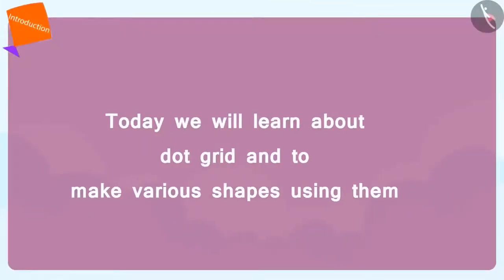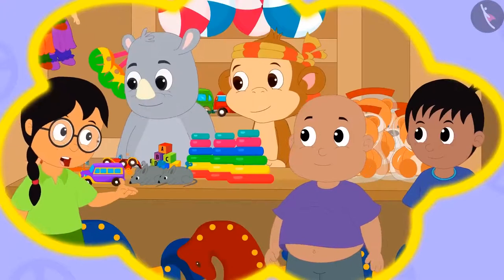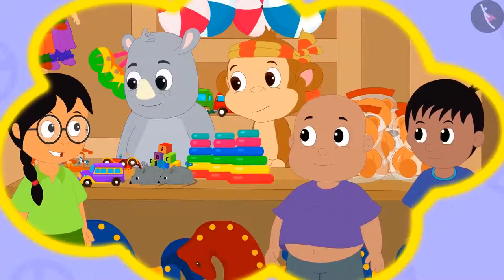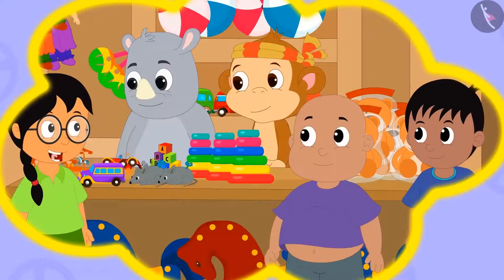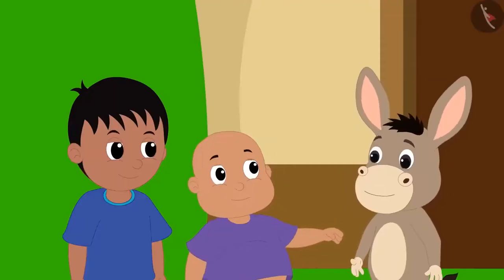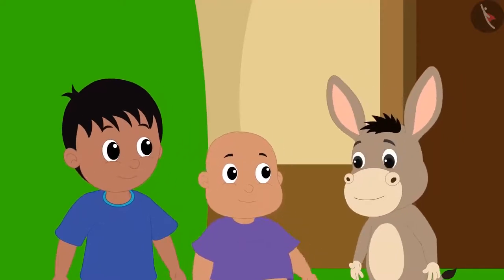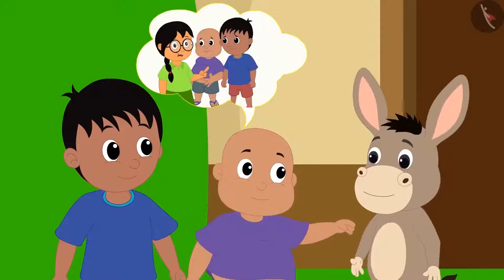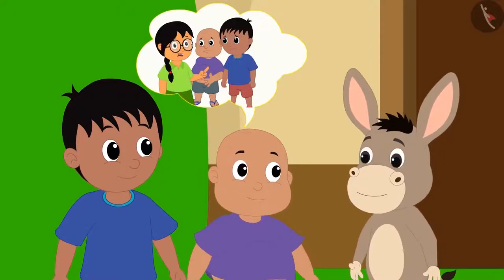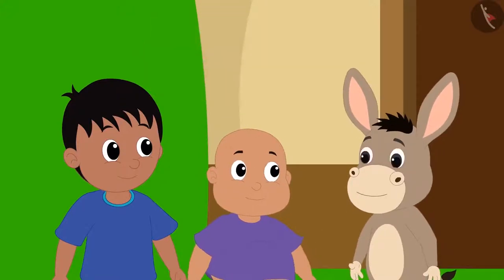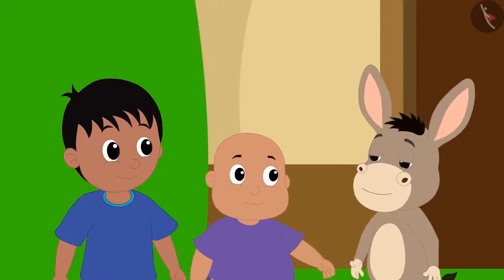Hello children, today we will learn about dot grids and how to create shapes using dot grids. Raju and Bablu went to Bola the donkey and told him that Meenu said no one can make a better shape than her. They wanted to have a competition between Meenu and Bola, where they would make the same shape.